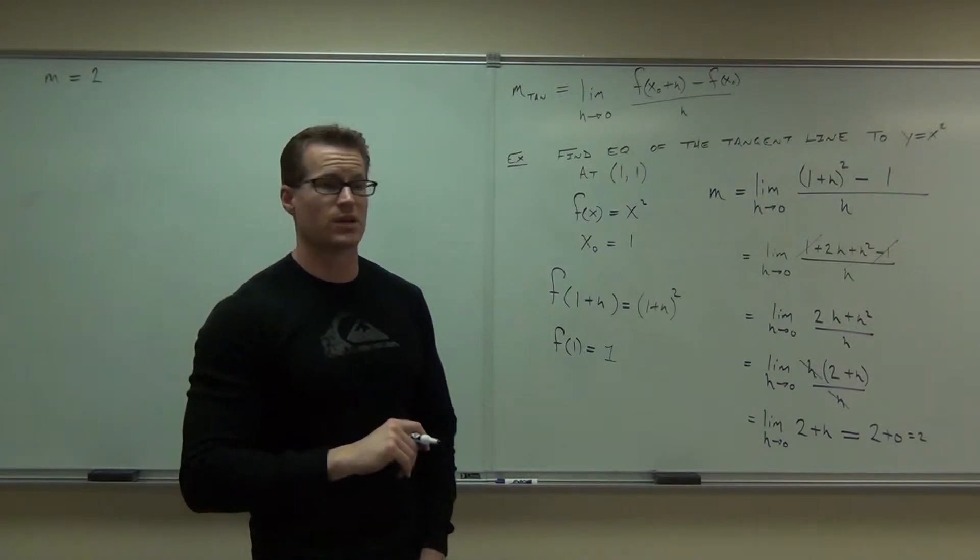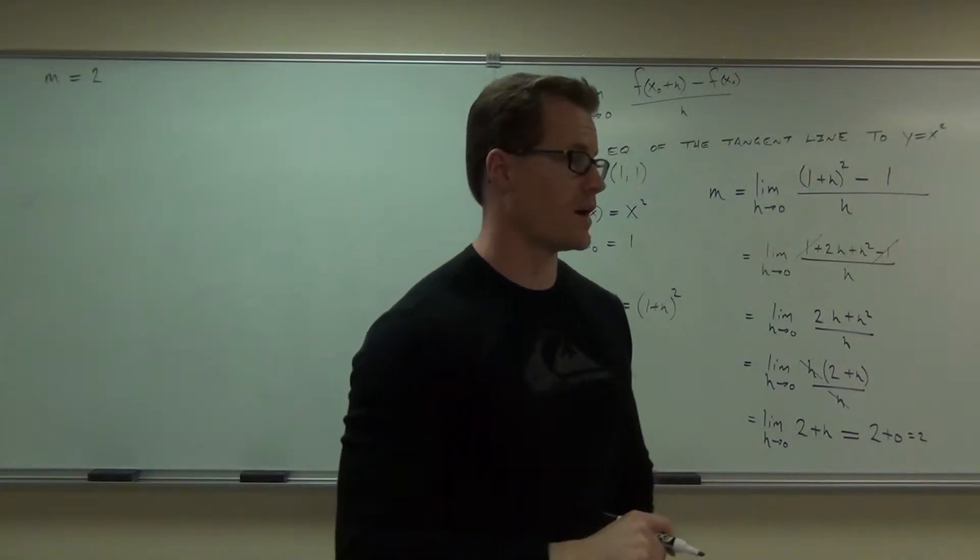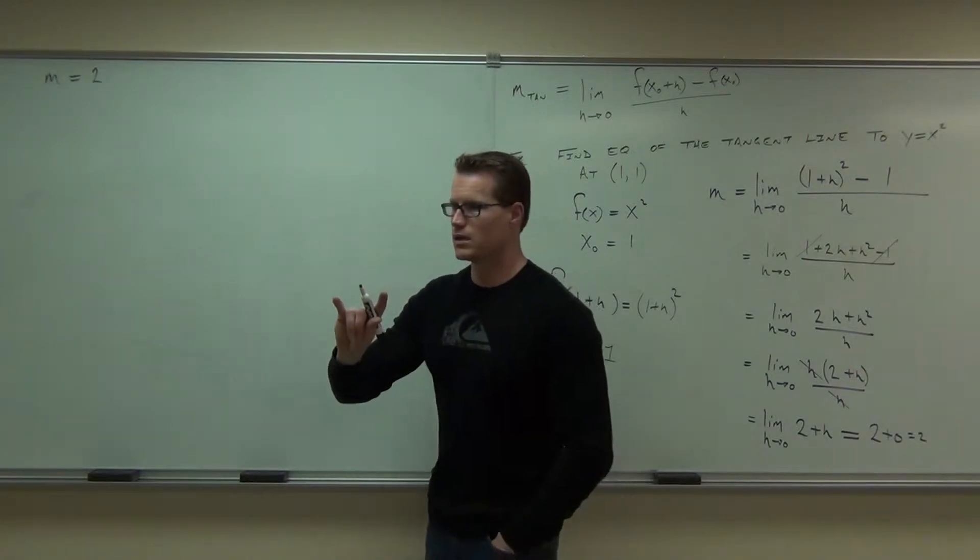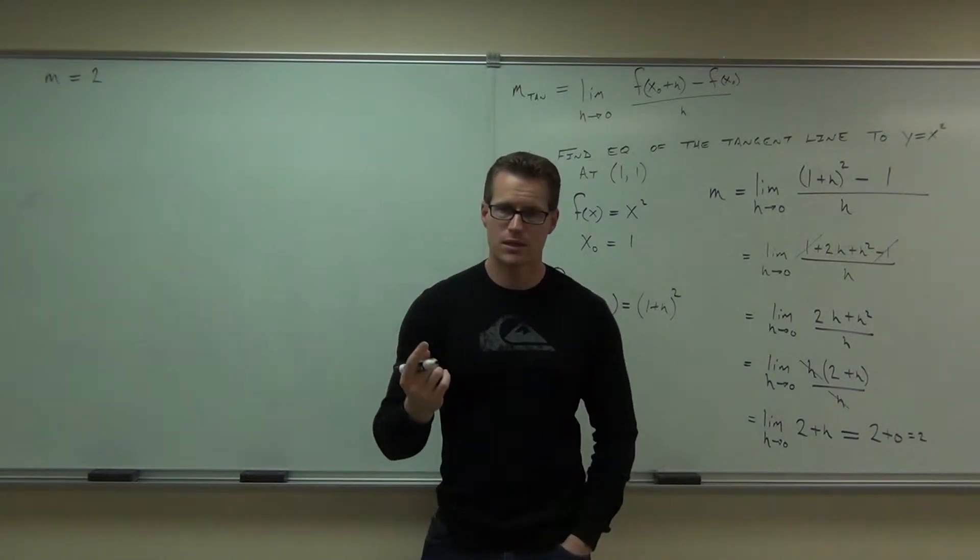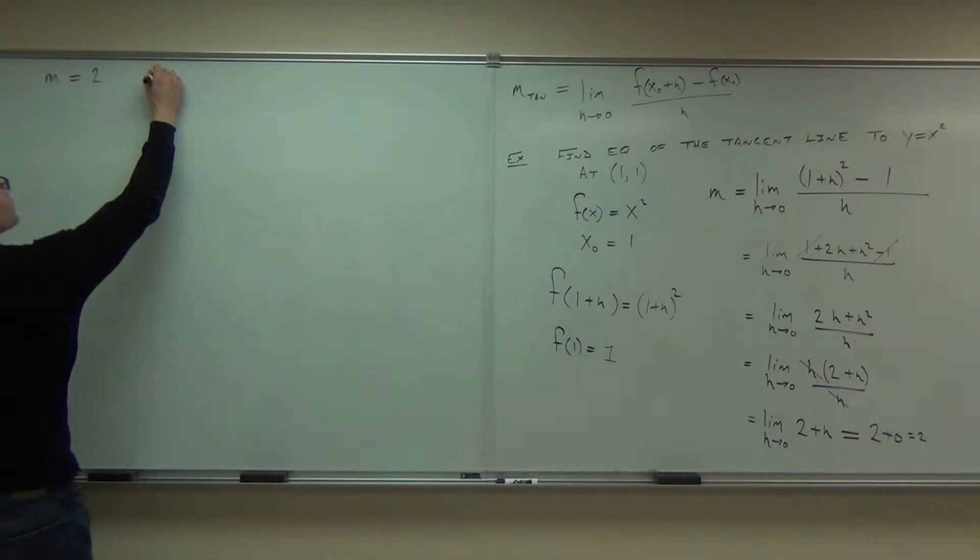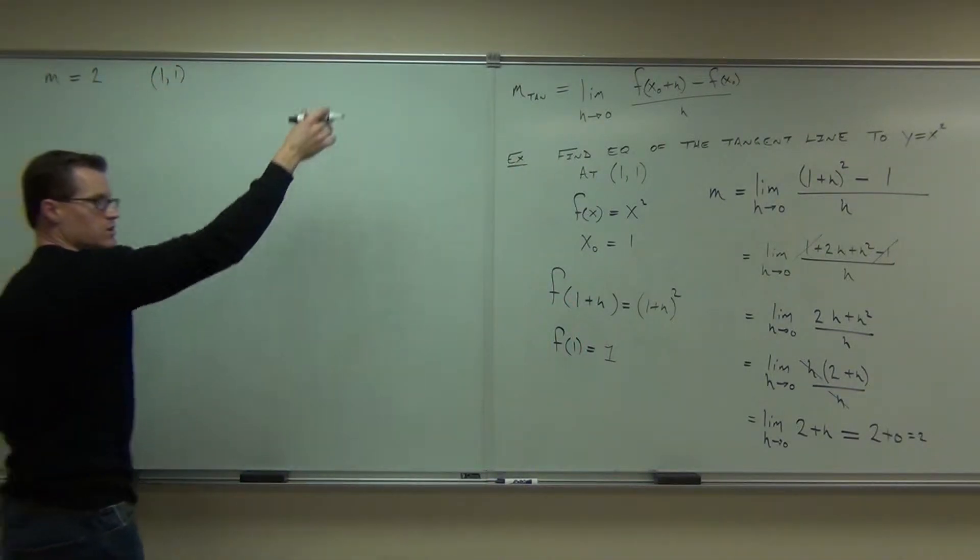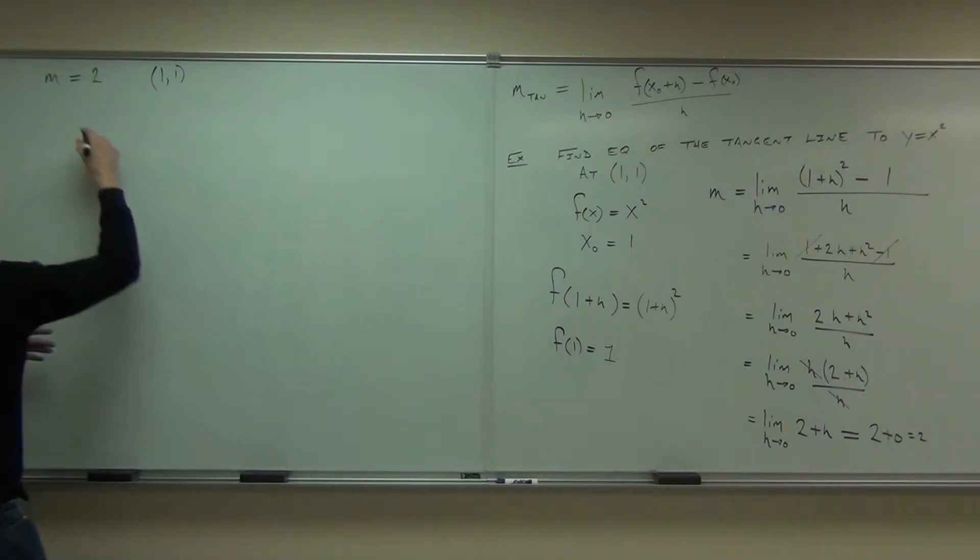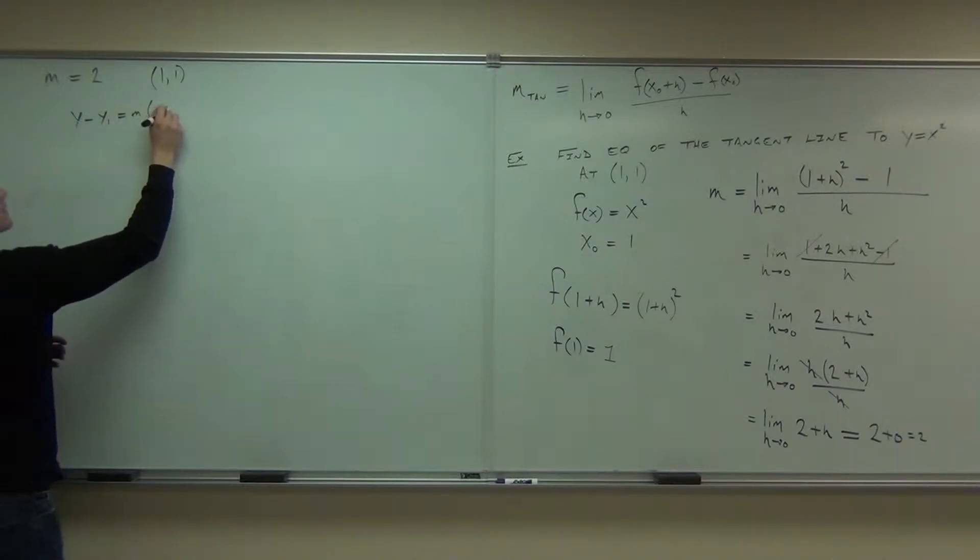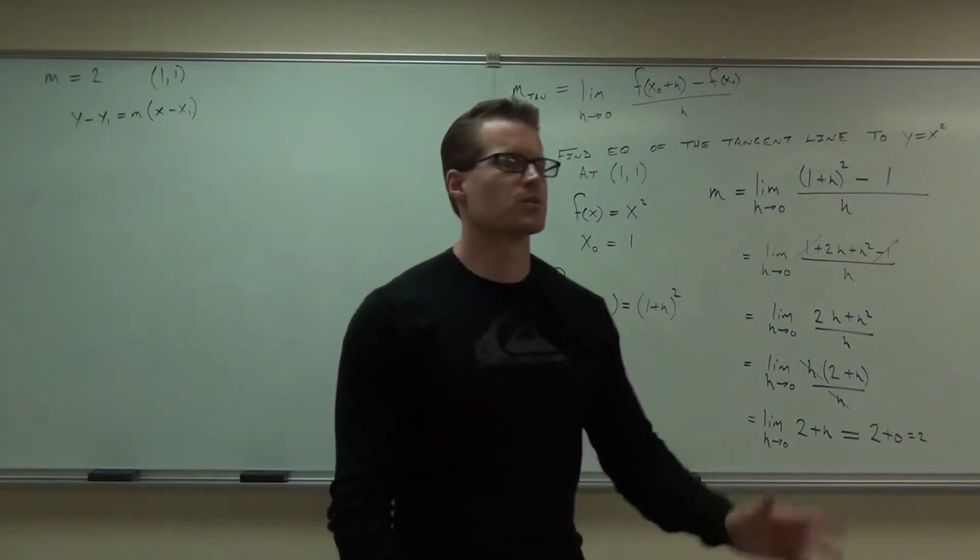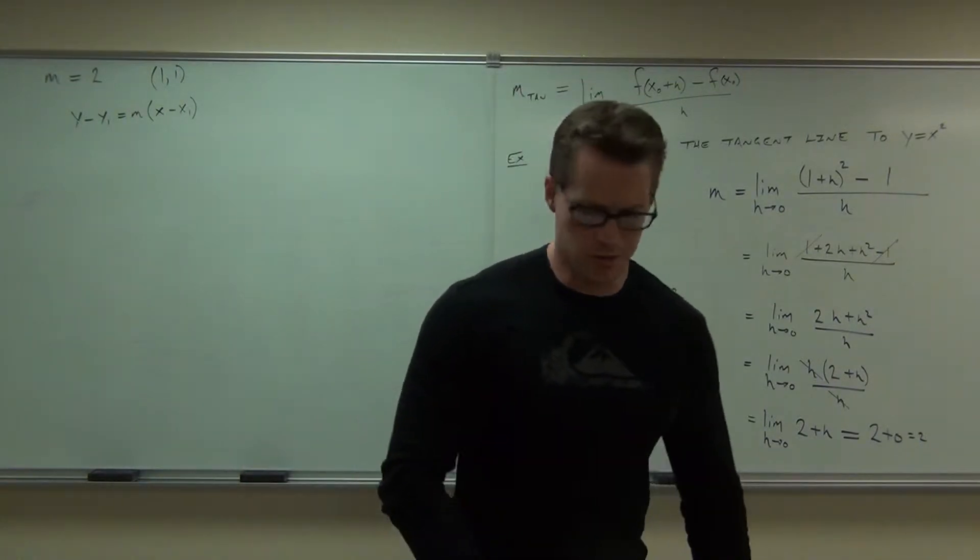Can you find the equation to the line? What do you need to find the equation to the line? You need two things always to find the equation of a line. Point and slope. Do we have a point? What's the point? (1,1). Do we have a slope? We do now because we just used limits to find one. That's kind of neat. And we'd use the point-slope formula, y minus y₁ equals m times x minus x₁. Why don't you plug that in there and see what you get.